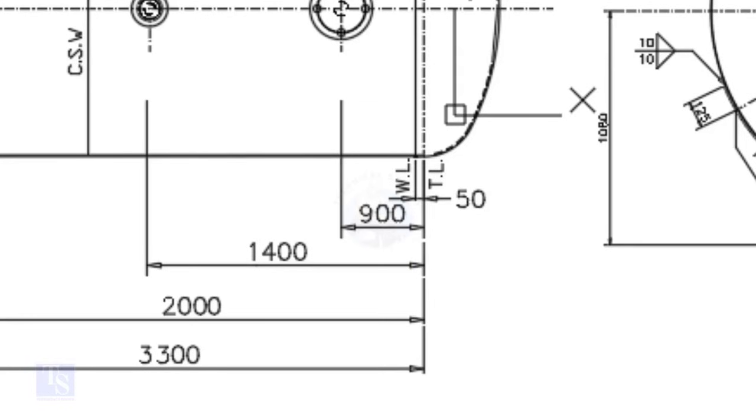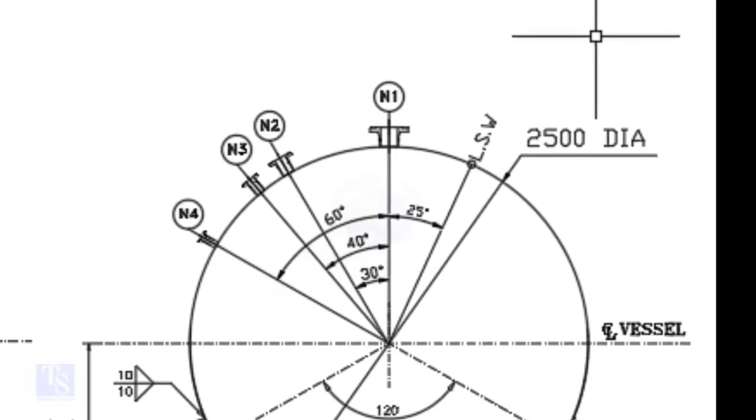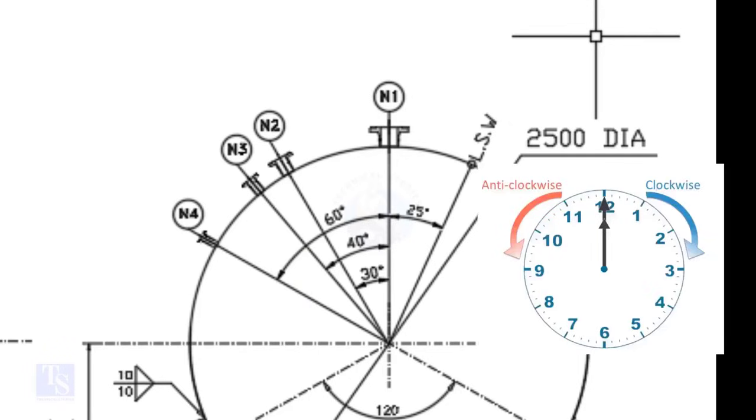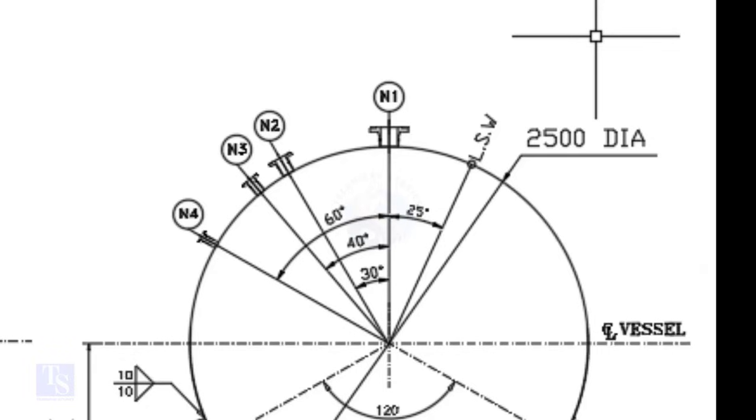Now, look at the nozzle orientation. The nozzles are arranged in an anticlockwise direction. We are going to mark the centers of four nozzles: N1, N2, N3, and N4.